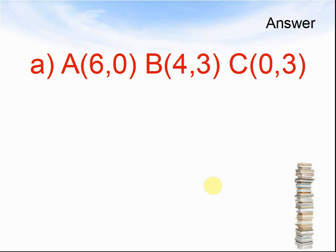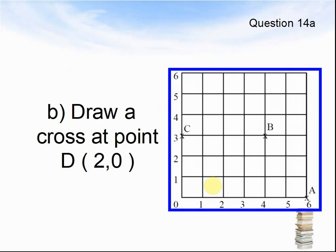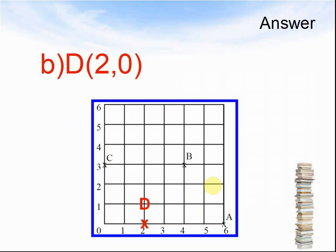Let's look at the next question. Draw a cross point at 2, 0. Pause the video until you are ready. Here comes the answer. D is at 2, 0.